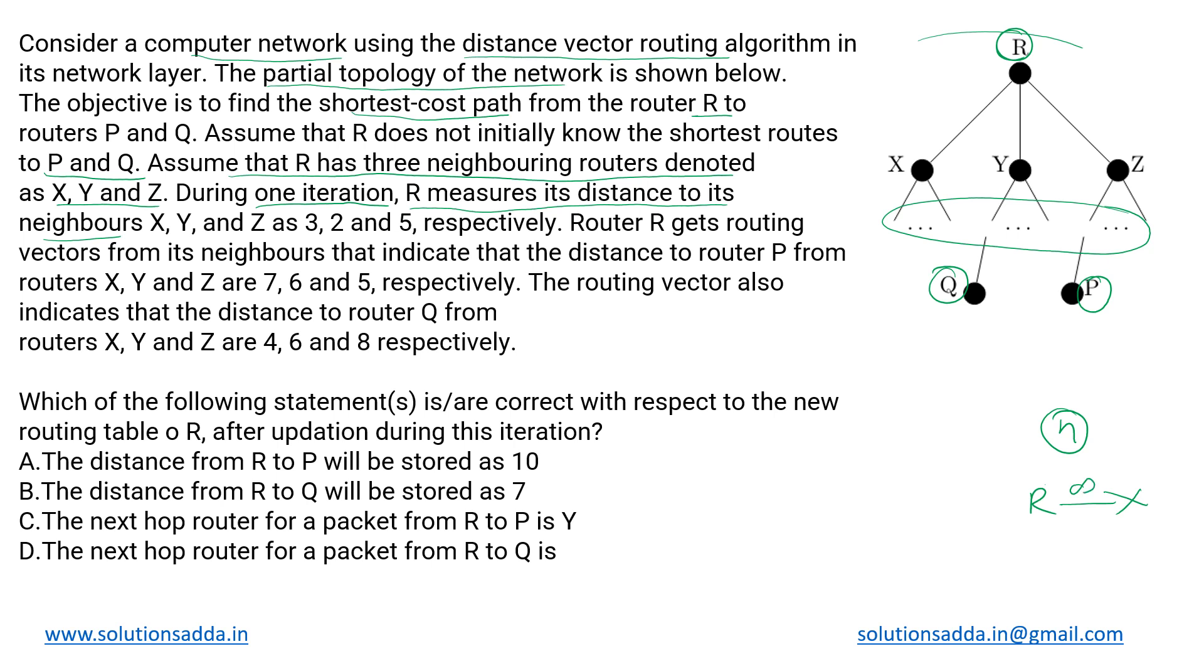In step one it will resolve its immediate neighbors, then in step two it will resolve those that can be reached in two hops from R and so on. So it measures the distance to its immediate neighbors X, Y and Z as three, two and five respectively. This happens in the first iteration.